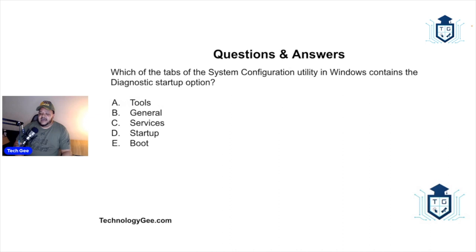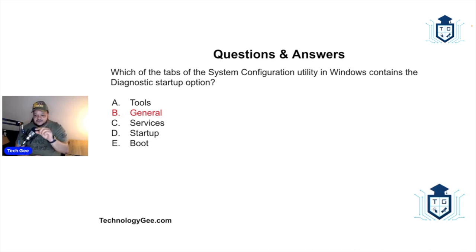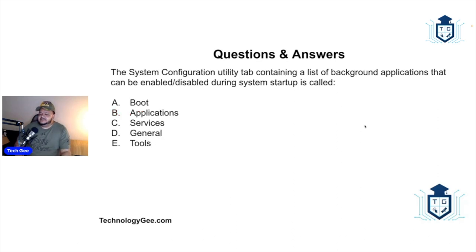Which of the tabs of the System Configuration utility in Windows contains the diagnostic startup option? The correct answer is the General tab. You pull up System Configuration — on Windows 10 or 11 just type 'system configuration' — and a window will appear with about six or seven tabs. The first tab says General, and that's where you can access the diagnostic startup information.